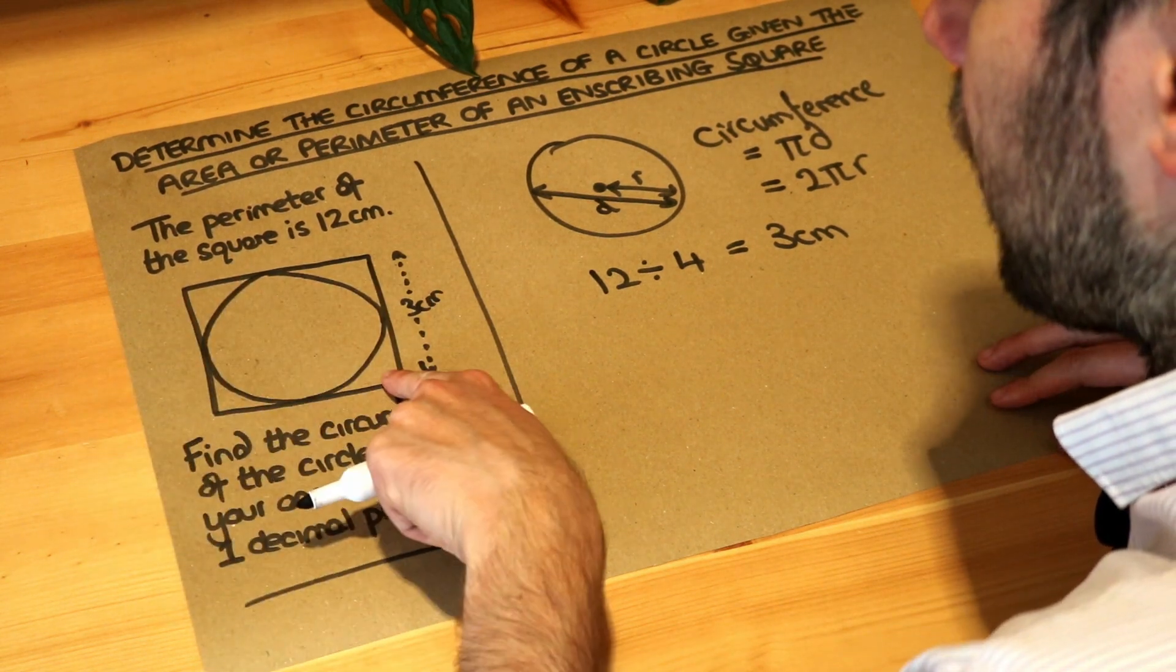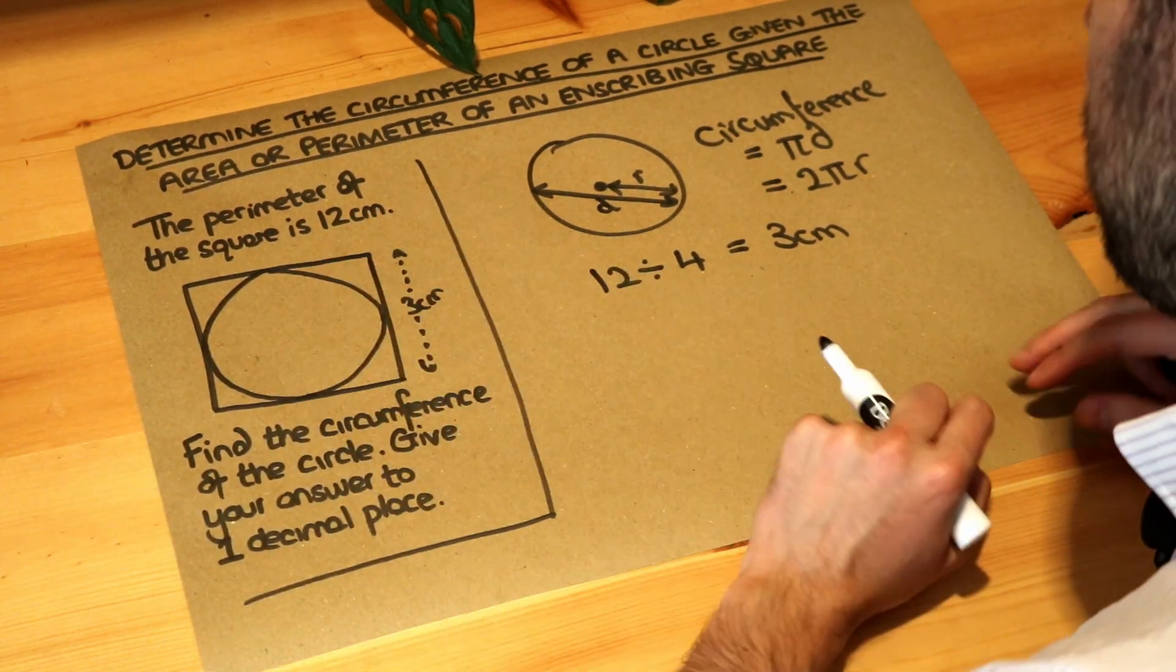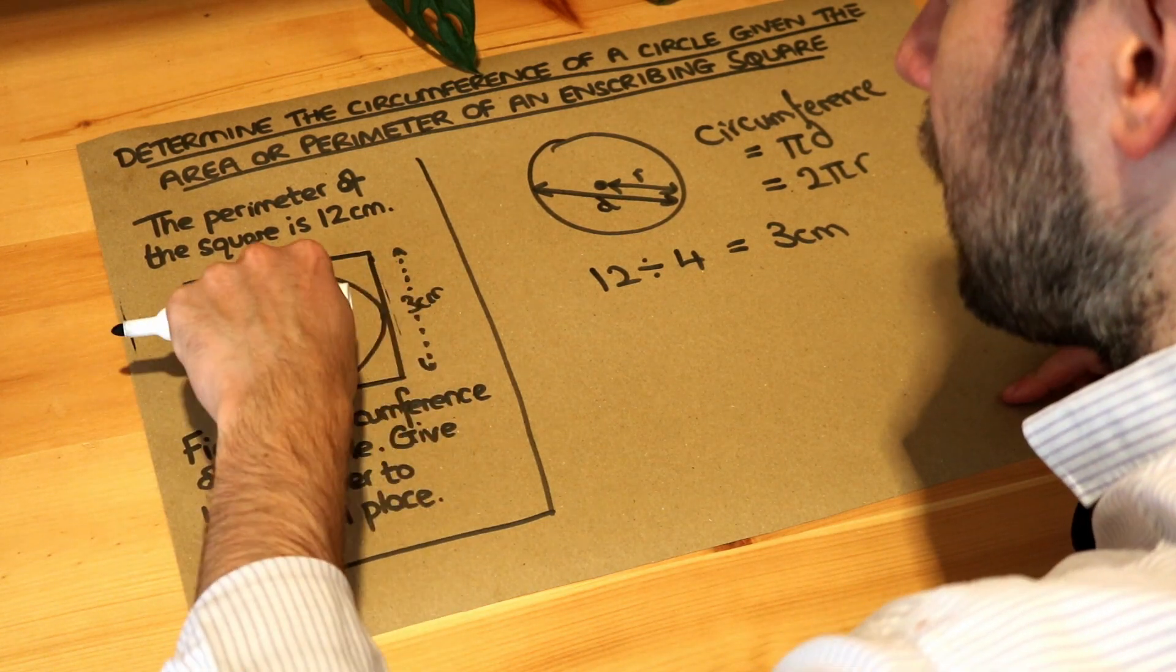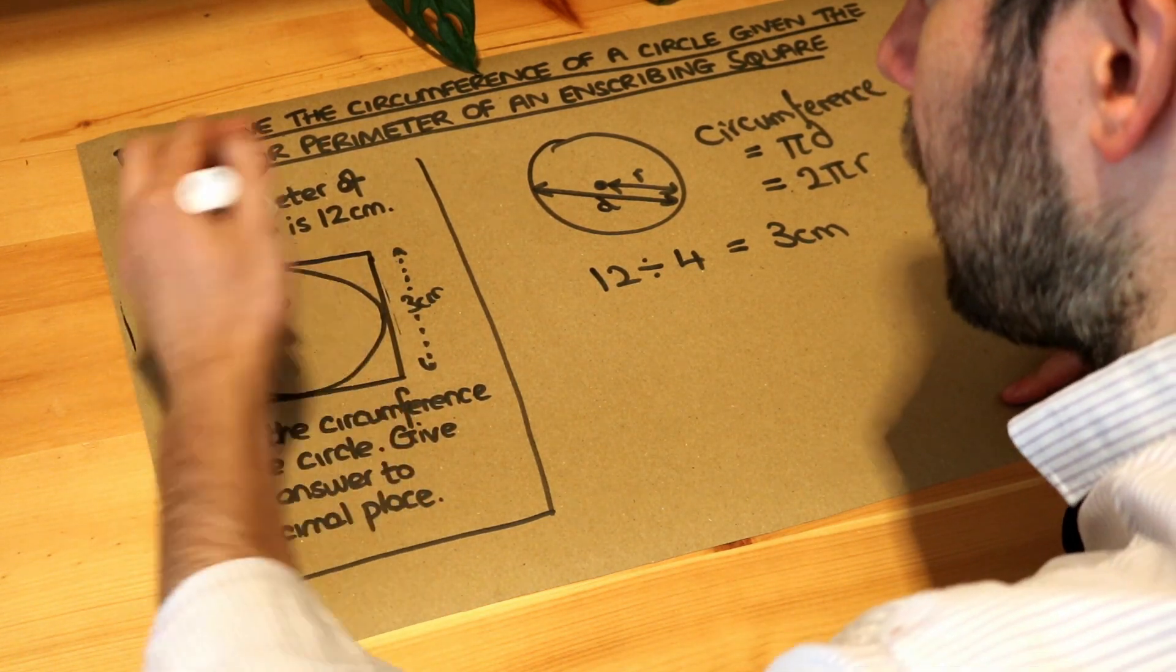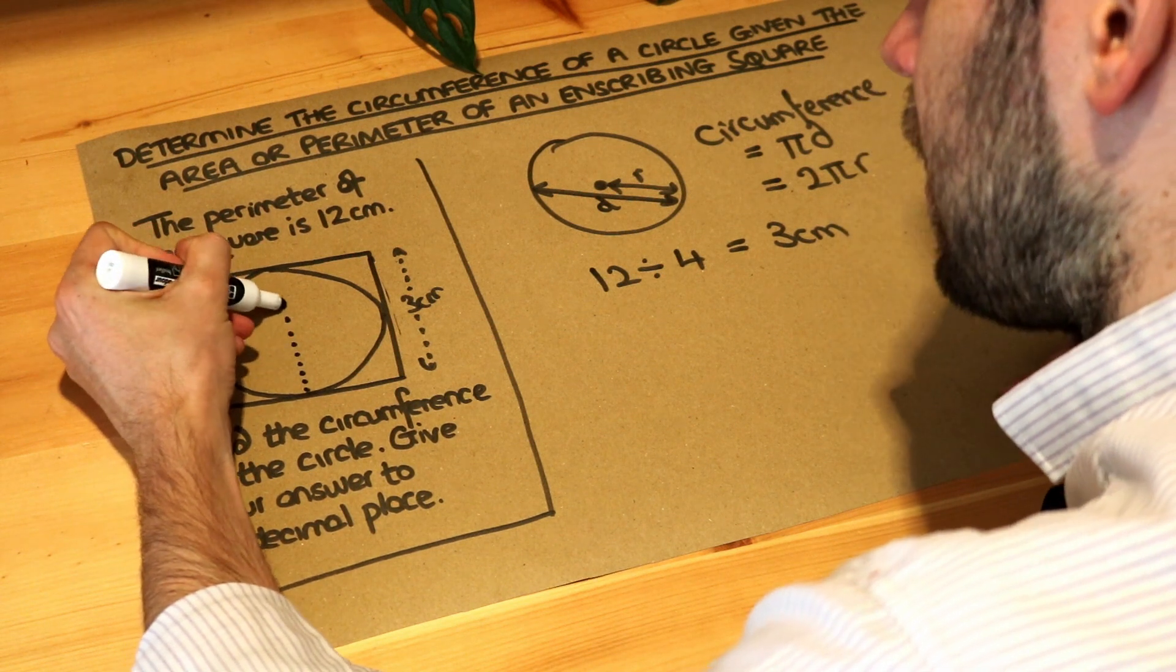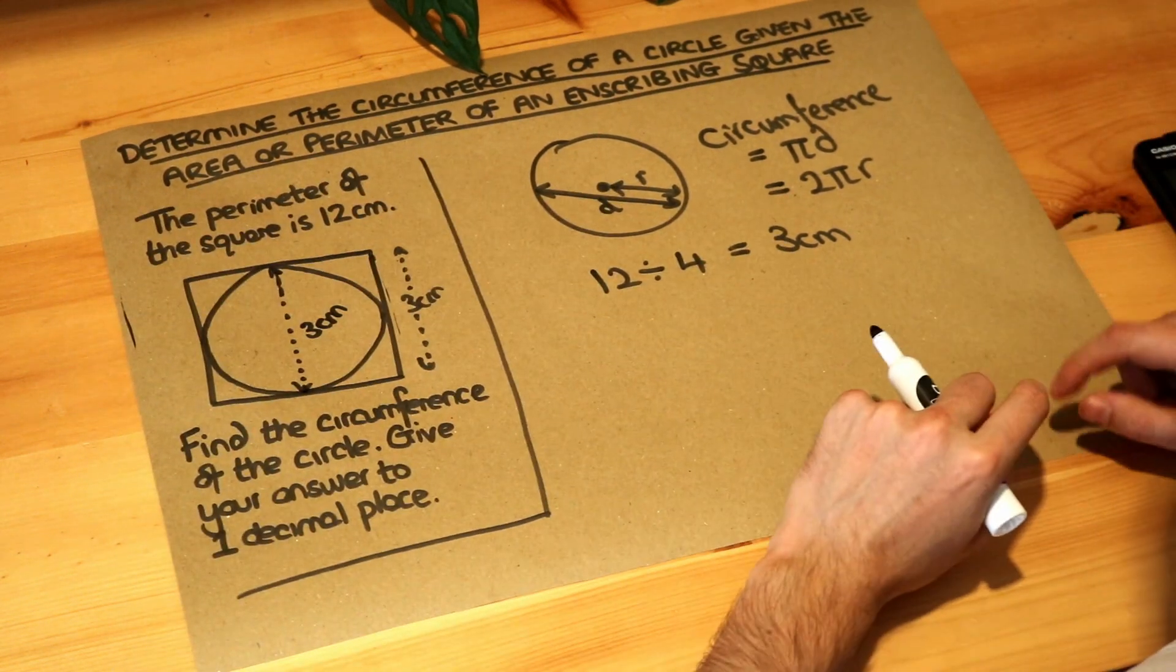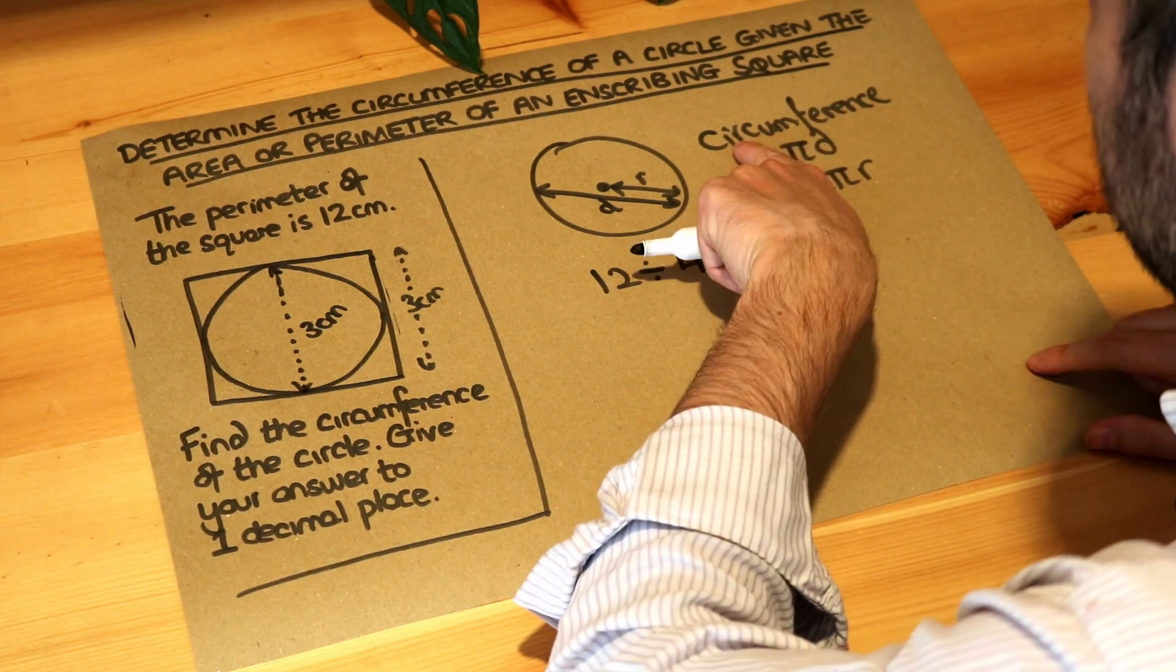We can see that the height of the square is the same as the diameter of the circle. We can see from here to here that is also three centimeters, and then we can just use the appropriate formula.